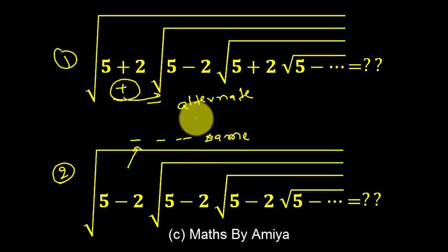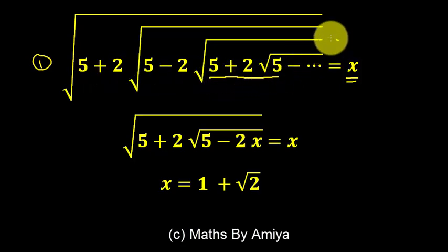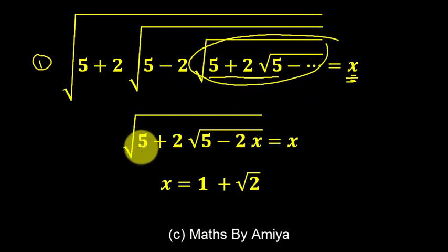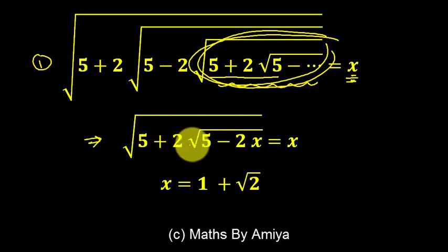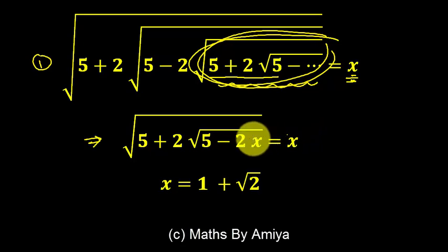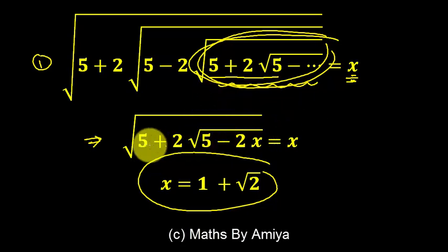How do we solve these types of questions using the conventional method? For question number one, we take the series sum equal to x. We get 5 plus 2 root 5 again, so we replace this complete series by x. The equation becomes under root of (5 plus 2 root(5 minus 2x)) equal to x. Squaring both sides twice gives a four-degree equation, and after solving it, x becomes 1 plus root 2. This is really a tough and cumbersome process.